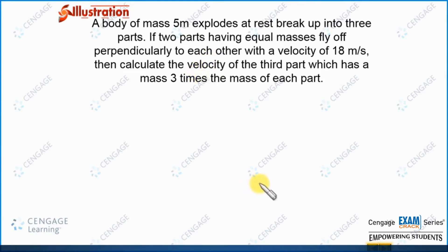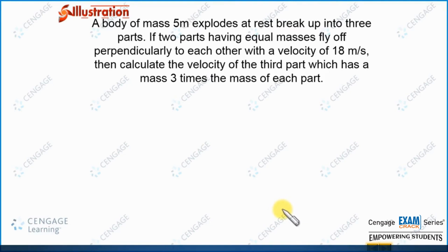After the explosion, the body breaks into three parts and there is no external force acting on it. So the linear momentum just before and just after the explosion must be conserved. The total mass is 5m: two parts each have mass m, and the third part has mass 3m.